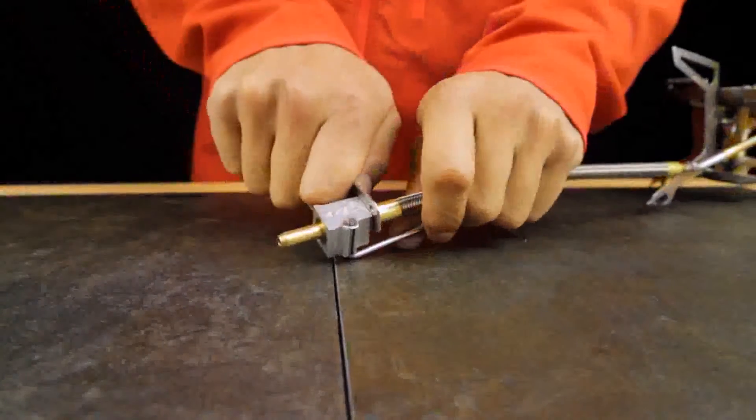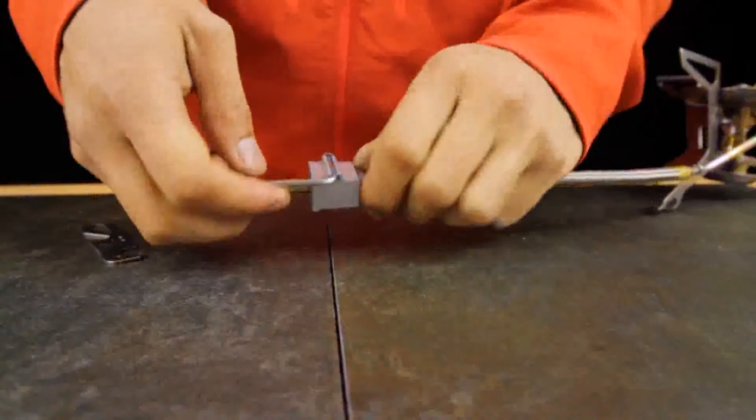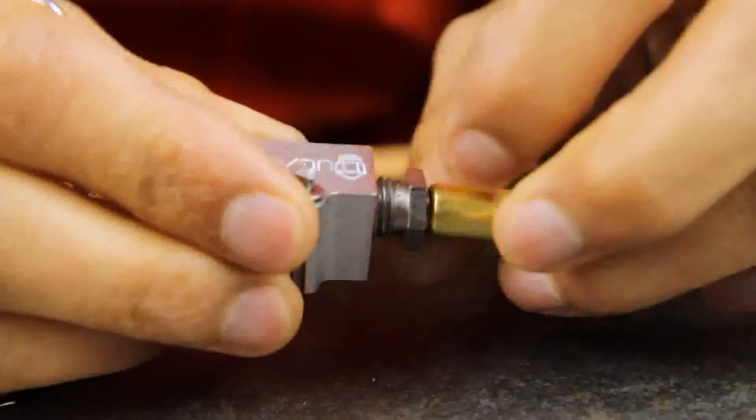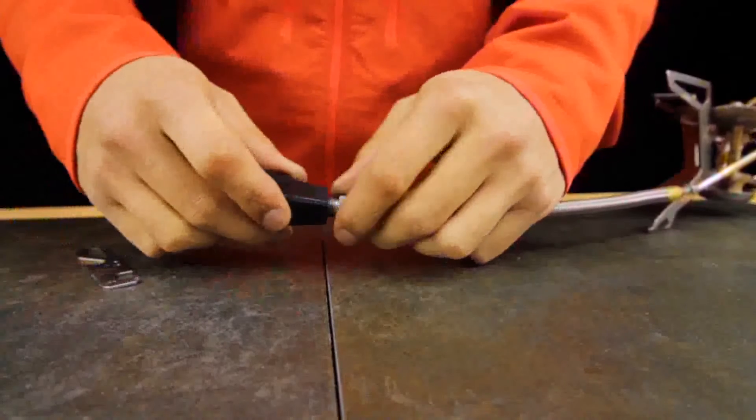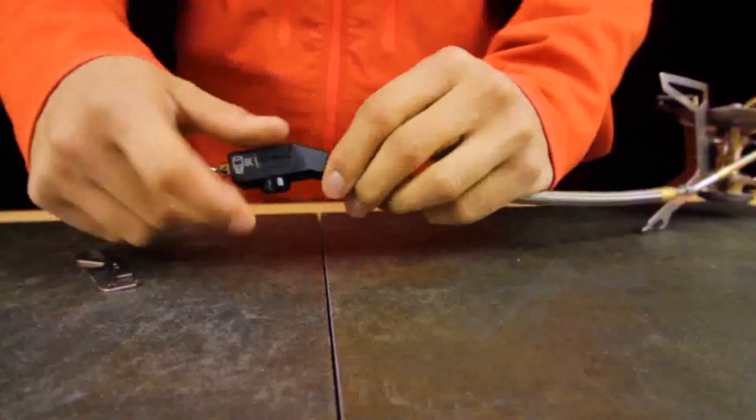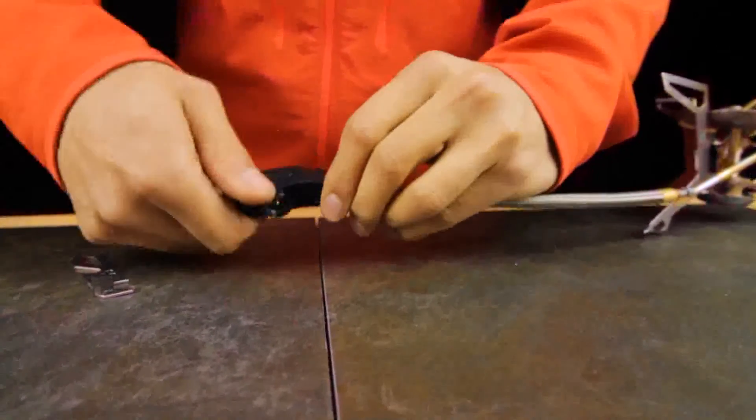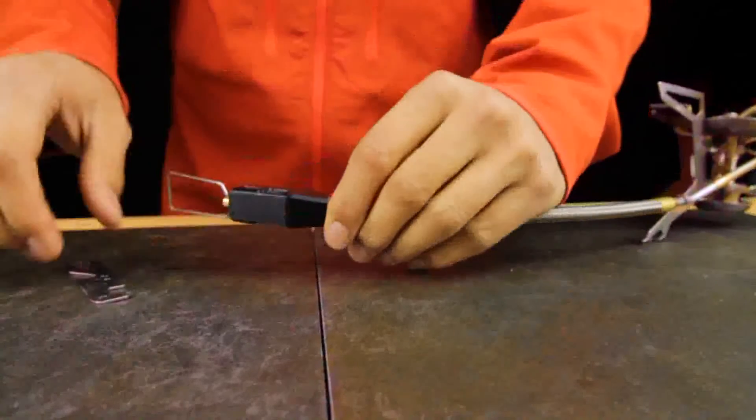To change the fuel adapter, loosen the retainer nut on the fuel adapter using the jet and cable tool, and disconnect the fuel adapter from the fuel line. Insert the end of the fuel line into the new fuel adapter. Snugly tighten the retainer nut using the jet and cable tool.